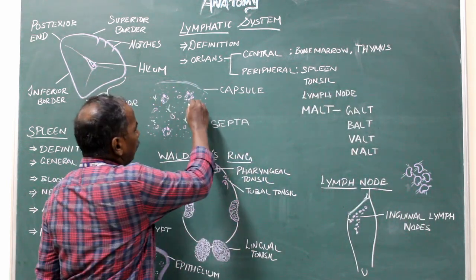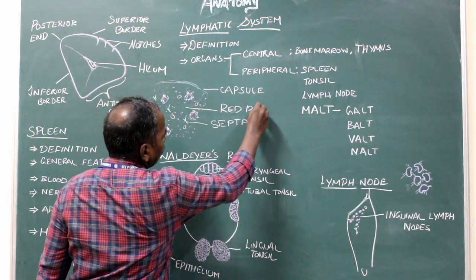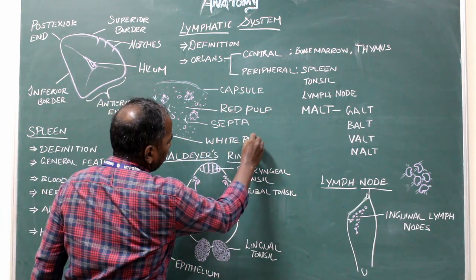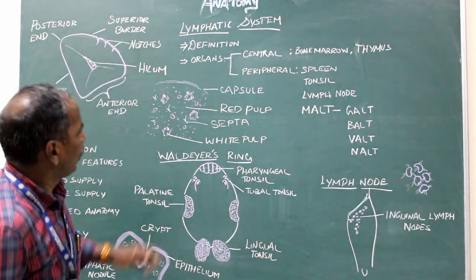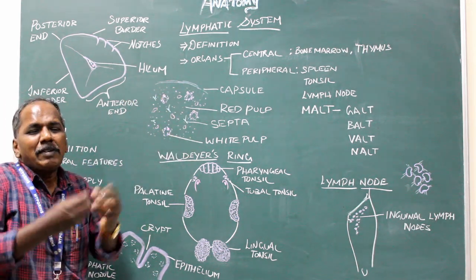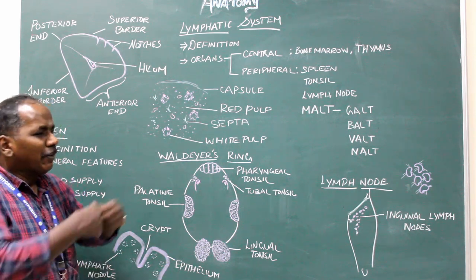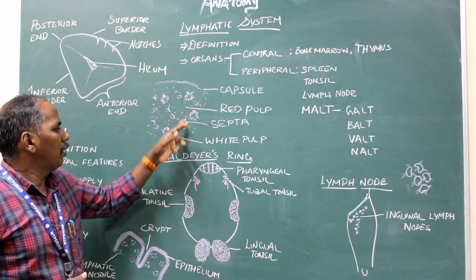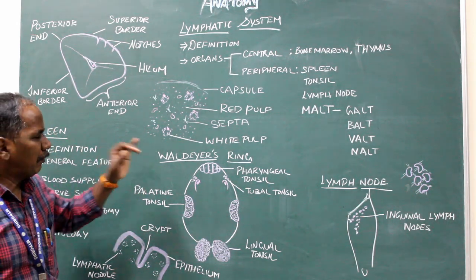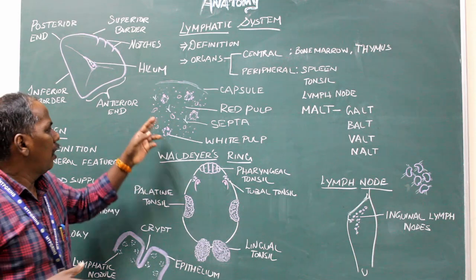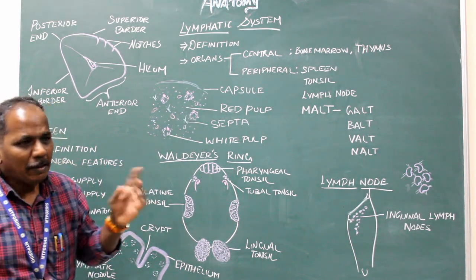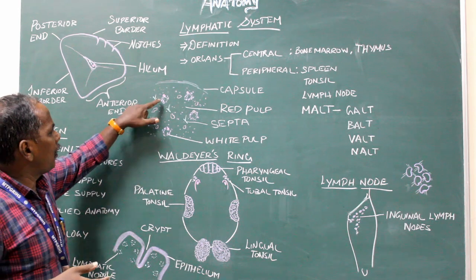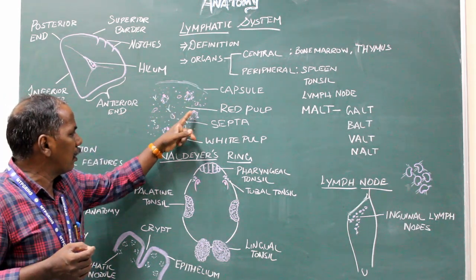The red pulp contains diffusely scattered lymphocytes with sinusoids — open spaces within the tissue. The white pulp contains densely packed lymphocytes with an eccentric arteriole — a small branch of an arteriole — present within the white pulp. The presence of an eccentric arteriole is a characteristic feature of the white pulp. That is the histology of the spleen.